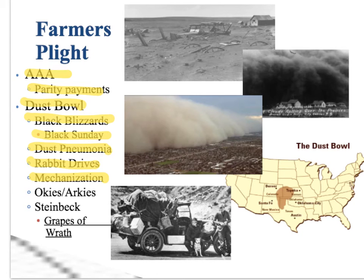These dust storms were significant problems. A lot of people tried to stick it out, but even more gave up. They were known as Okies or Arkies — because they came from Oklahoma or Arkansas — most commonly Okies. These are families that stuck it out as long as they could but just gave up. They couldn't pay their mortgage on their farm, they couldn't farm, couldn't grow anything, and that's all they knew how to do.